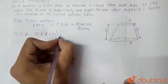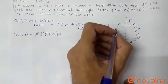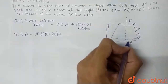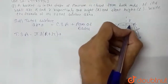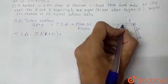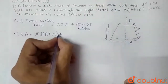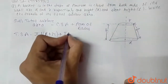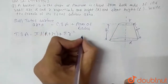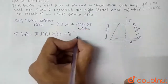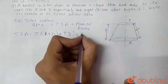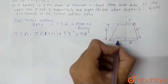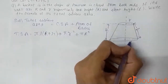Now we add the area of both bases. The area of the first base is π r² (small r squared), and the area of the second base is π R² (capital R squared), because the area of a circle is π R².